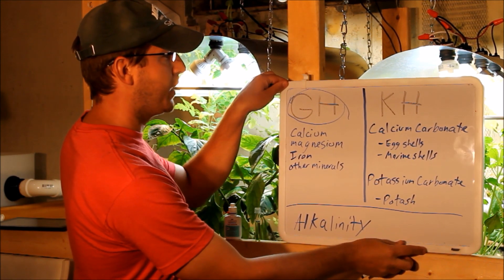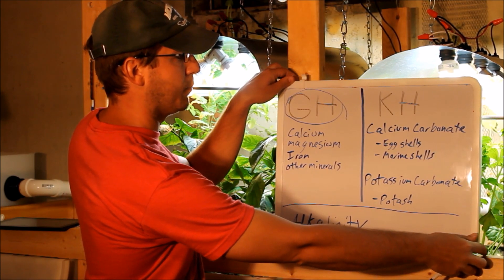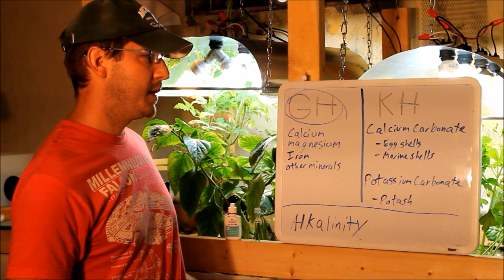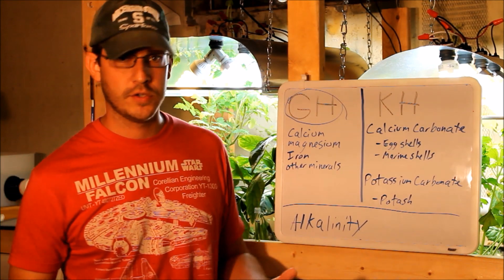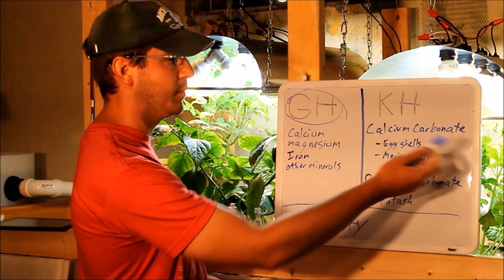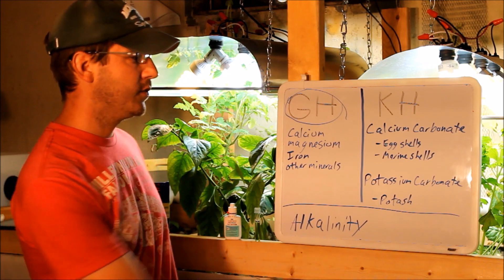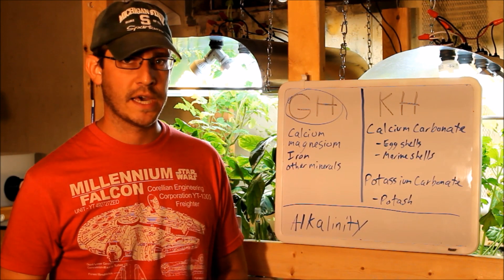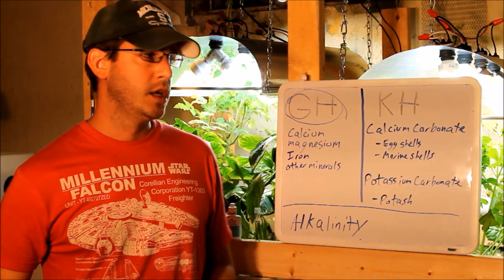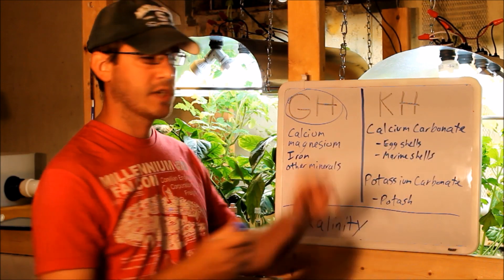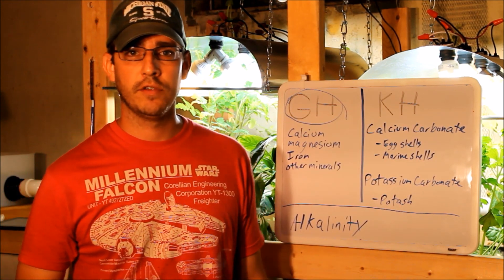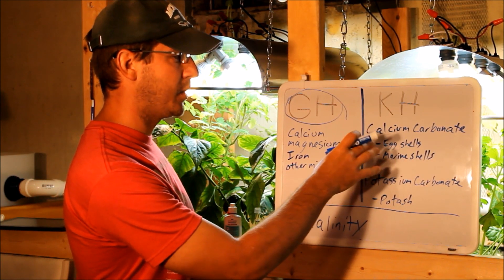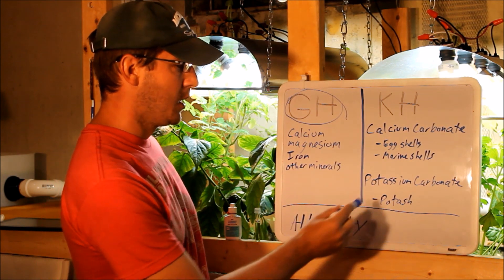Now, as far as carbonate hardness goes, carbonate hardness is a little bit more important and a little bit more in depth. Carbonate hardness is basically the presence of different carbonates in your system. The most common is going to be calcium carbonate. That's things like eggshells and marine shells, so any type of seashells or clamshells or snail shells. All that stuff is made out of calcium carbonate. This is the most common carbonate that there is.